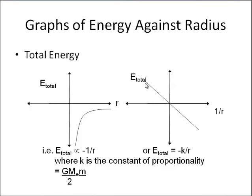The total energy is proportional to −1/r, and the constant of proportionality is G×M_Earth×m divided by 2. There are lots of similarities there — just have to be able to recognise these formulas, that's really, really important — and then apply them to these graphs. So that gives you an overview of the energy.